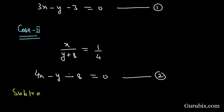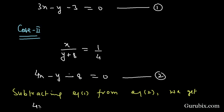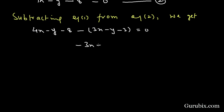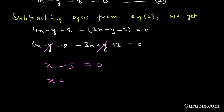Subtracting equation number 1 from equation number 2, we get: (4x − y − 8) − (3x − y − 3) = 0. The y terms cancel out, and subtracting 3x from 4x gives x. Subtracting −3 from −8 gives −5, so x − 5 = 0, which means x = 5.